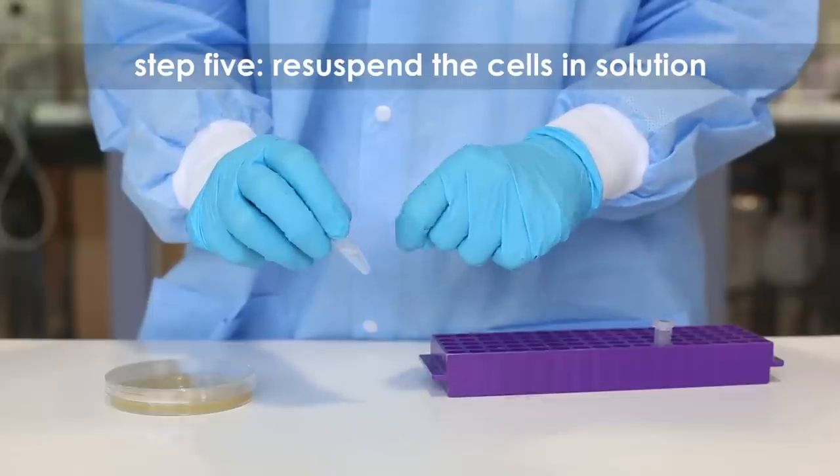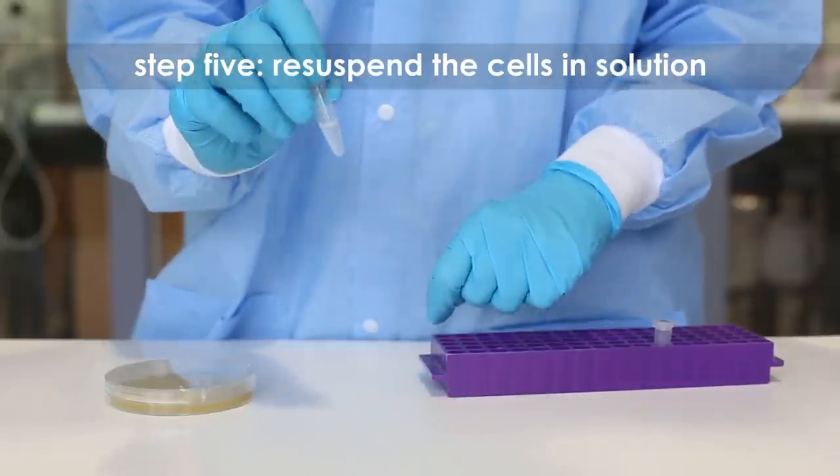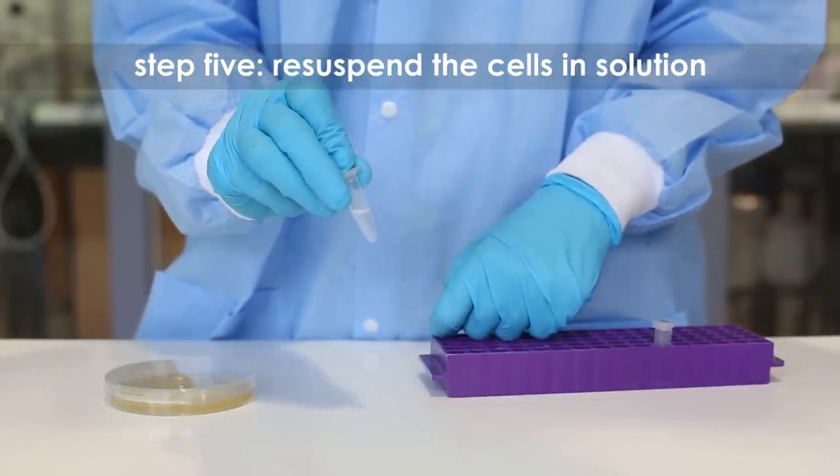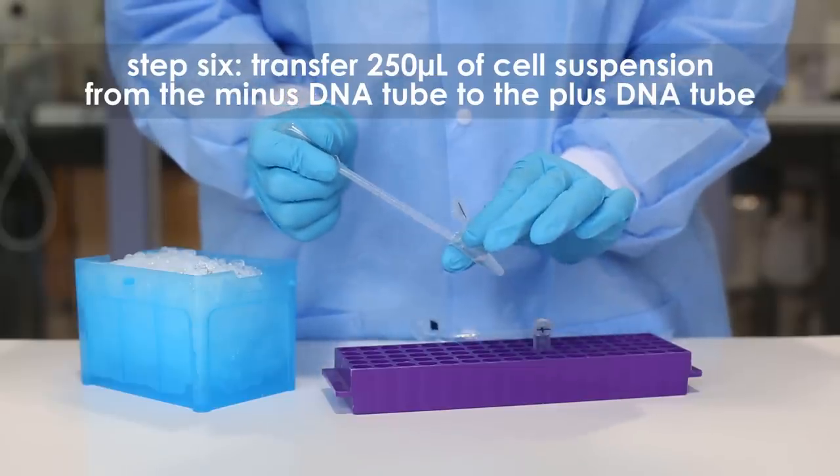Step five: fully resuspend the bacterial cells in the calcium chloride solution until no clumps of cells are visible. The cell suspension should look cloudy.